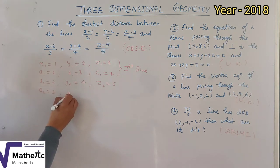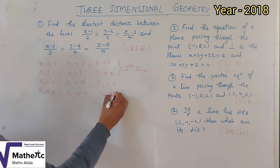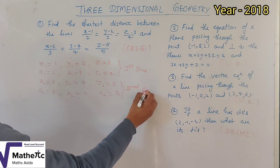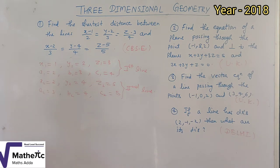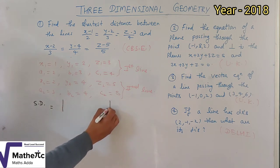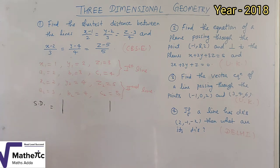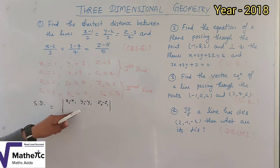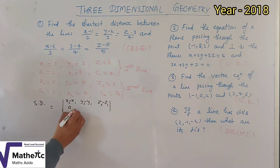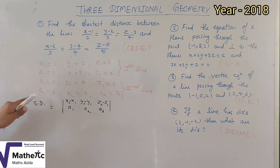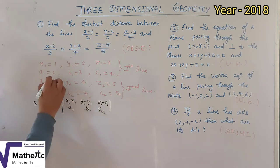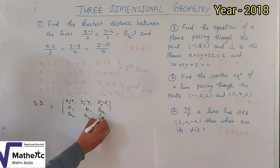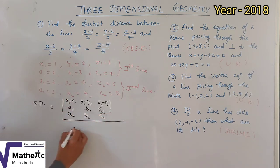This is the second line. Now the shortest distance formula uses a determinant. The first row is: x2 minus x1, y2 minus y1, z2 minus z1. The second row is the direction ratios of line 1: a1, b1, c1. The third row is the direction ratios of line 2: a2, b2, c2. This determinant is divided by the square root of (b1·c2 minus b2·c1) whole square plus the next terms.